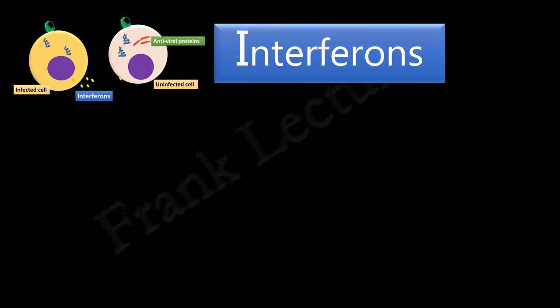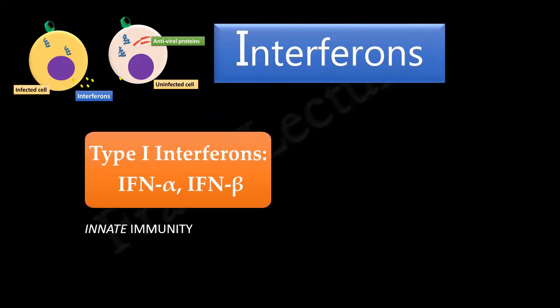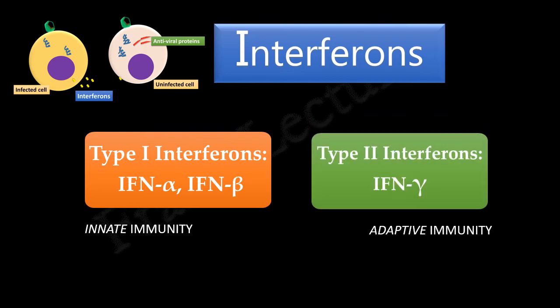All types of cells in the human body are capable of producing interferons, and they all have interferon receptors on their plasma membrane. Type 1 interferons, which are produced in response to viral infection, appear early in the infection and are part of non-specific, that is innate, immunity. Type 2 interferon — interferon gamma — is part of adaptive immunity and appears late in infection.